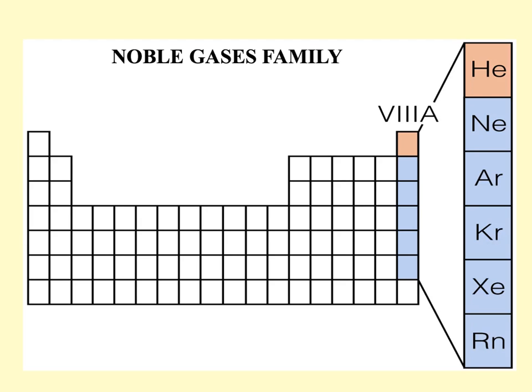And finally, the noble gases family. They are the least chemically active family in the whole periodic table. Do you know why they do not react at all? There is a simple reason. All of these noble gases have the last level of energy — the last shell of energy — full with valence electrons. So they do not have space to combine with other elements. They are complete. How many noble gases are there?